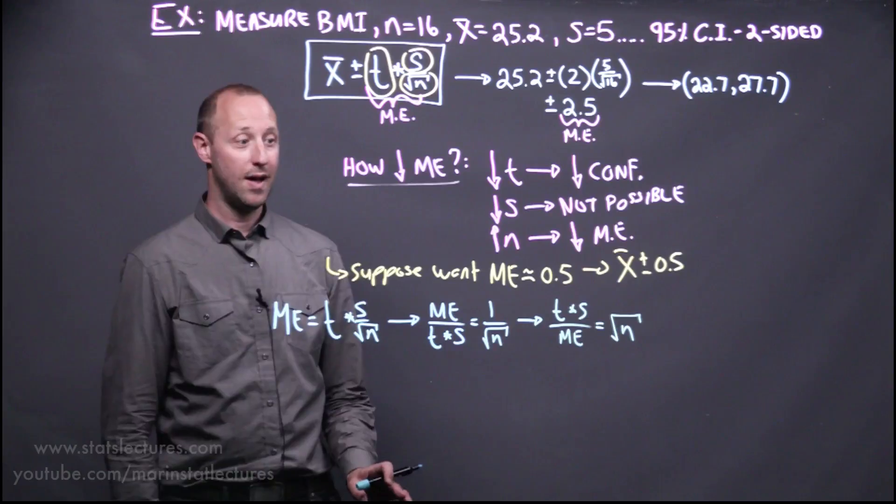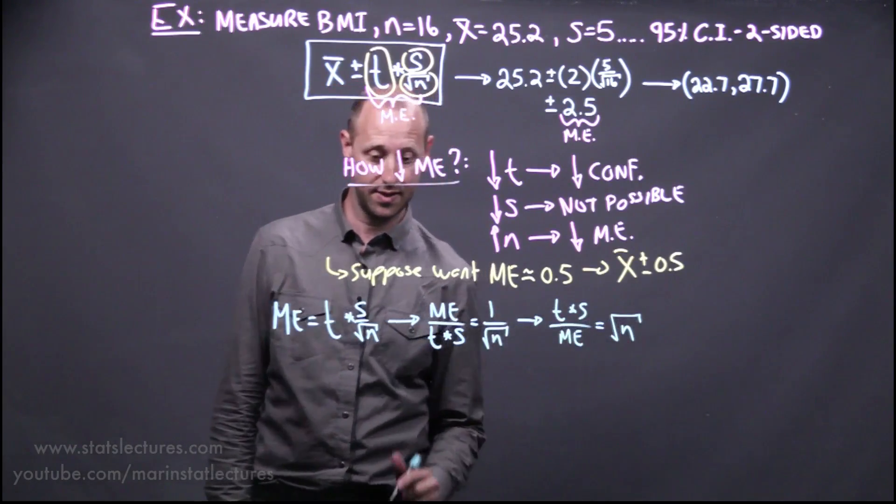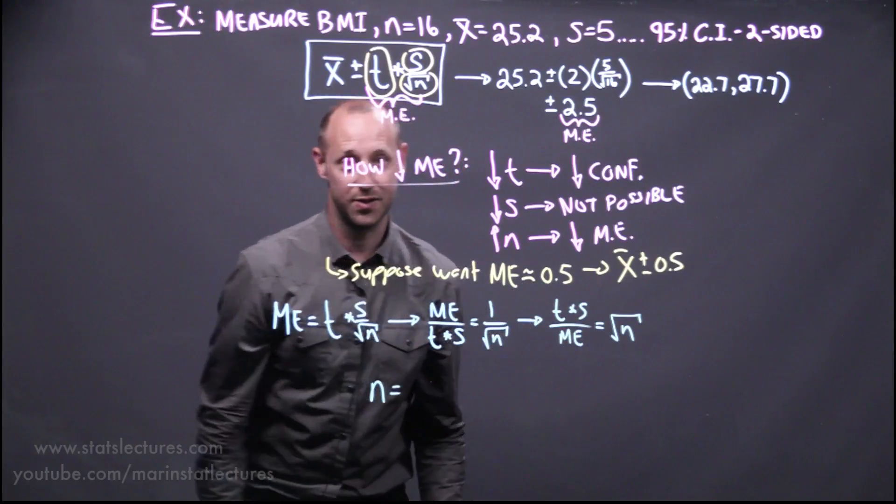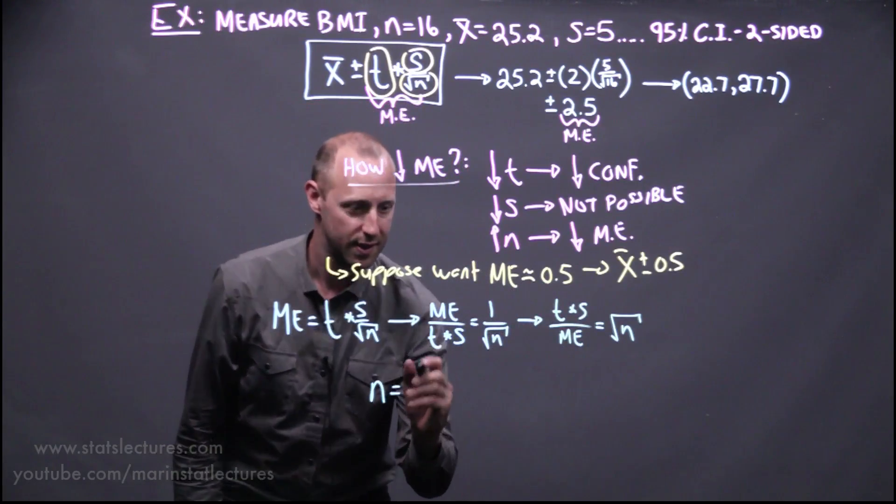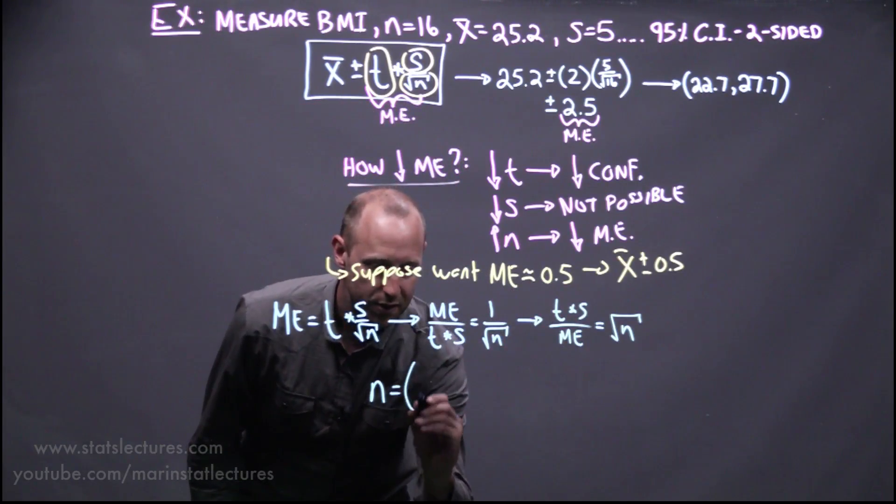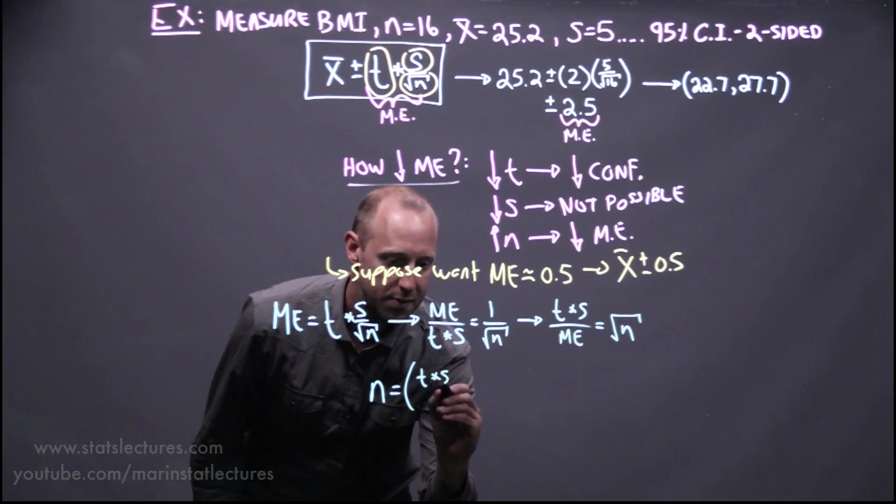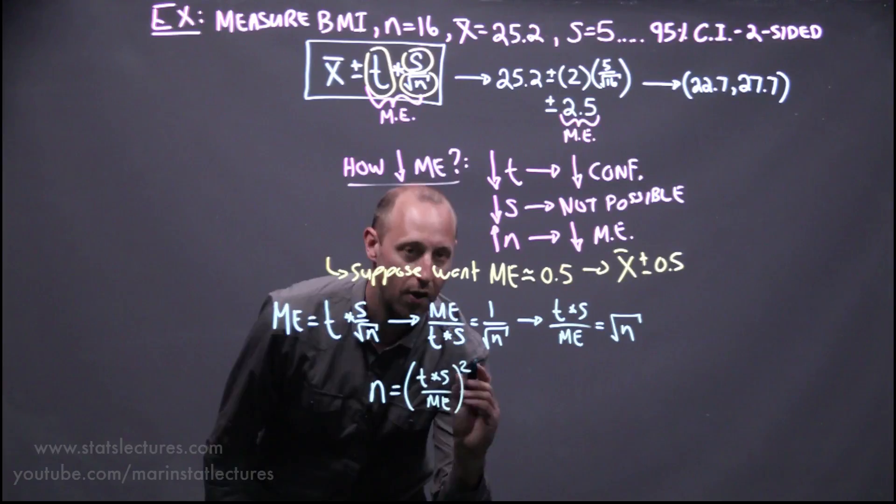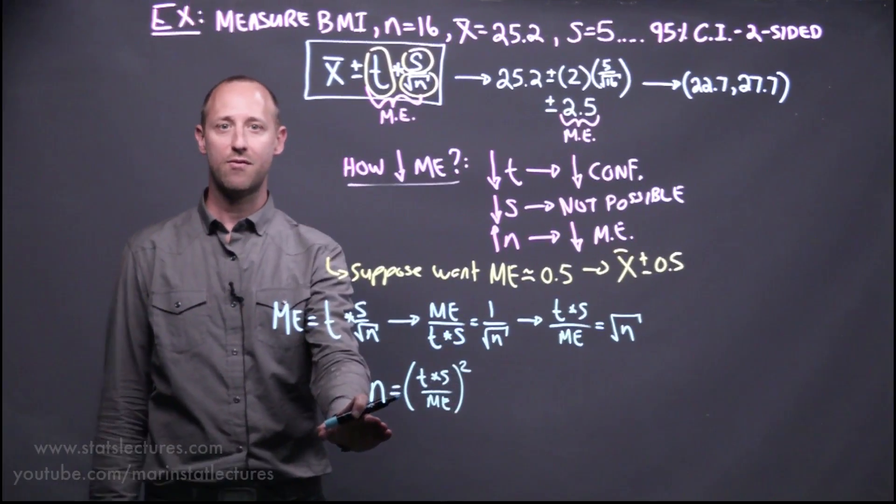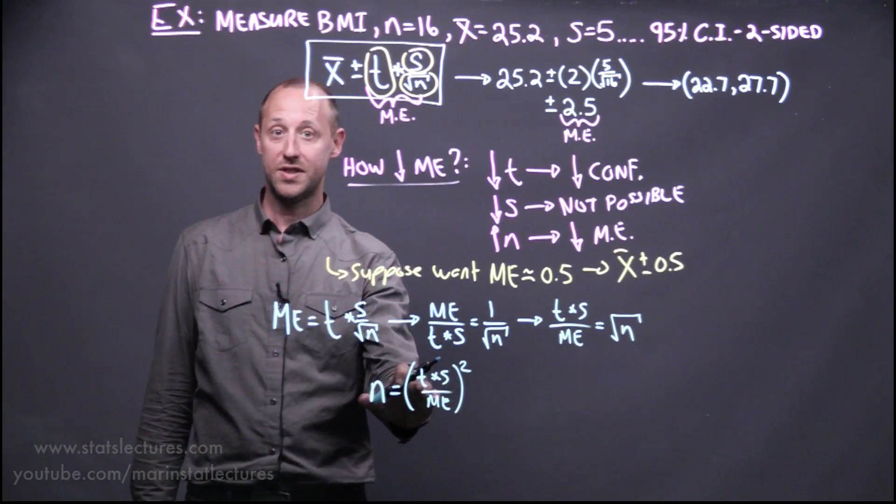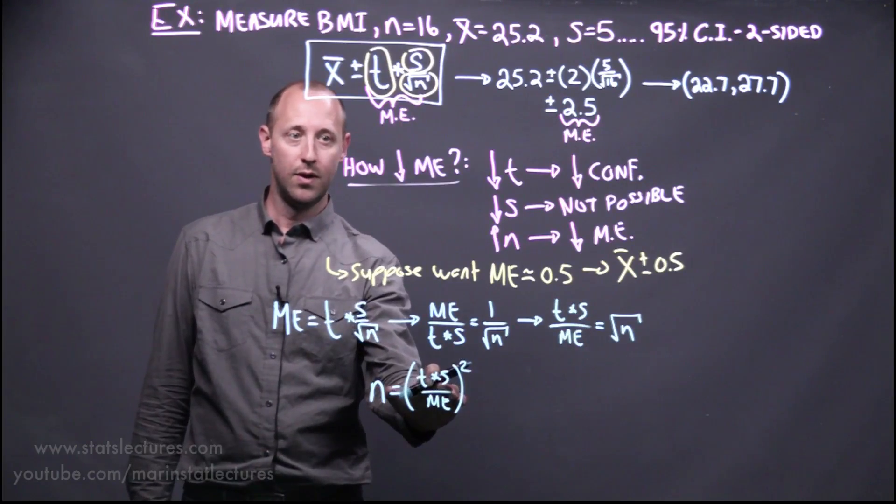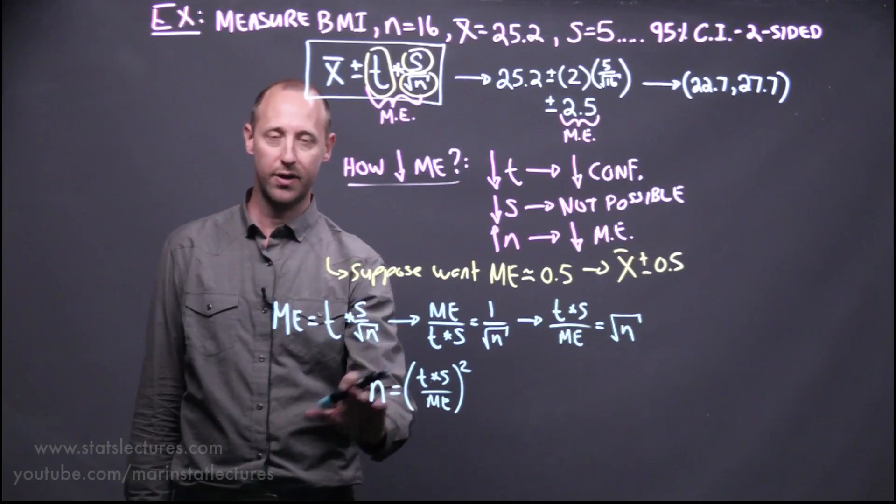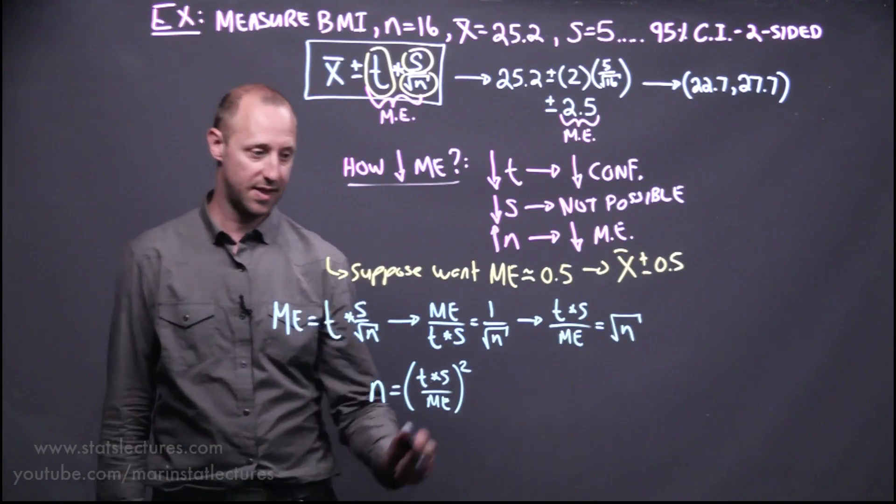t times s over the margin of error is equal to the square root of n. And then finally, I'm going to square both sides. And I'm just going to write them on the other side so it looks a bit neater or more organized. n is equal to t times s over the margin of error all squared. So now we have a formula here where we can sub in what's the level of confidence we want, what's the estimate of the standard deviation, what's the margin of error we want, and find out the sample size that's necessary.